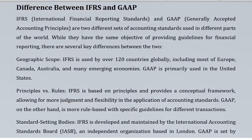Difference between IFRS and GAAP. IFRS — International Financial Reporting Standards — and GAAP — Generally Accepted Accounting Principles — are two different sets of accounting standards used in different parts of the world. While they share the same objective of providing guidelines for financial reporting, there are several key differences. Geographic scope: IFRS is used by over 120 countries globally, including most of Europe, Canada, Australia, and many emerging economies. GAAP is primarily used in the United States.